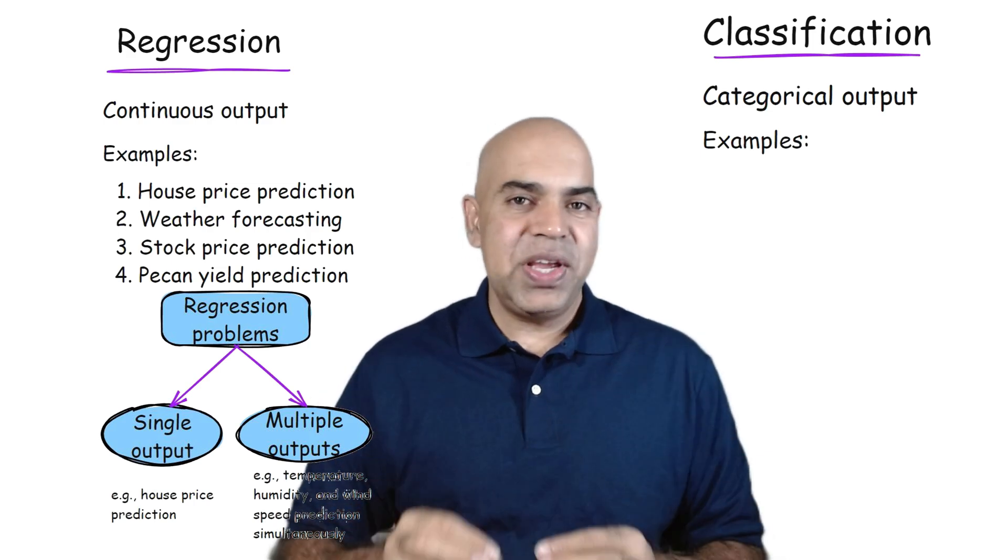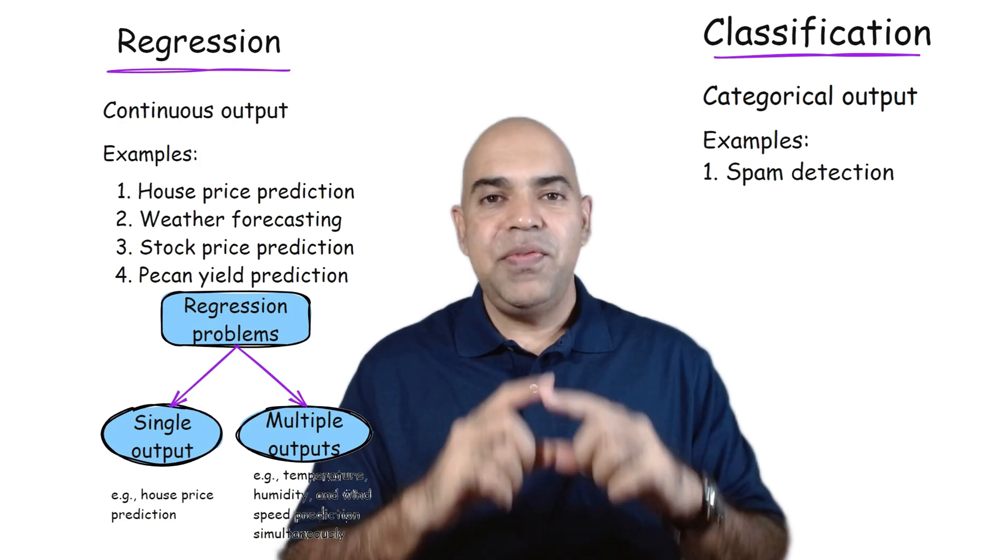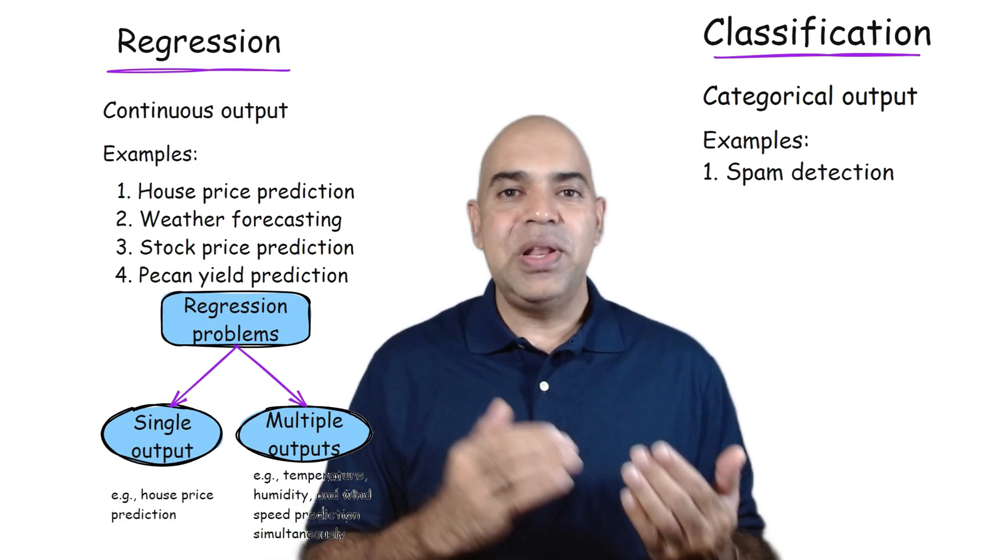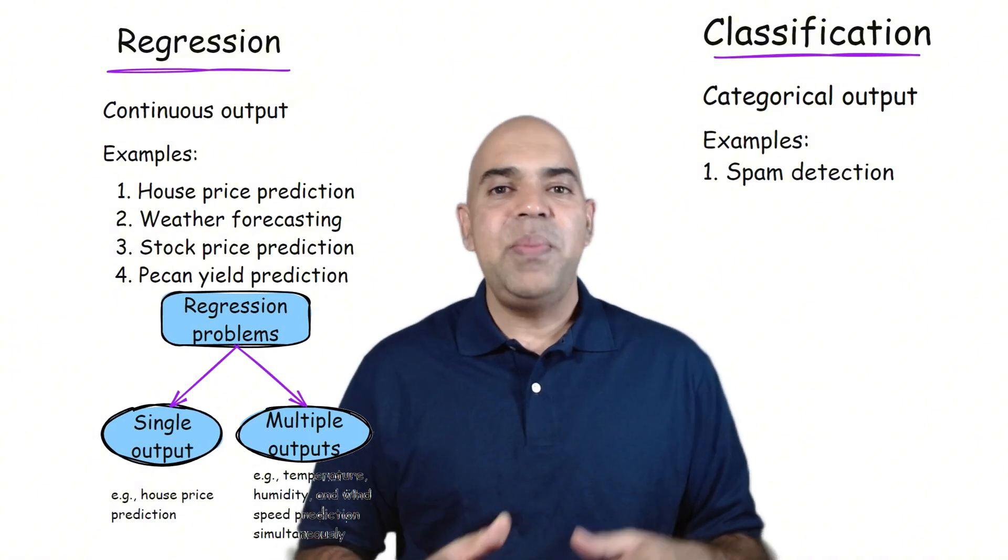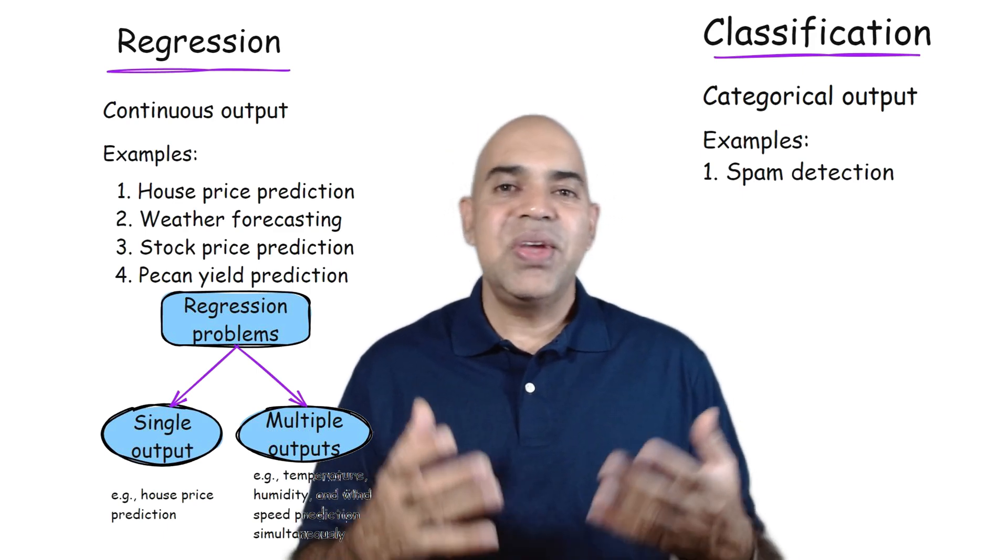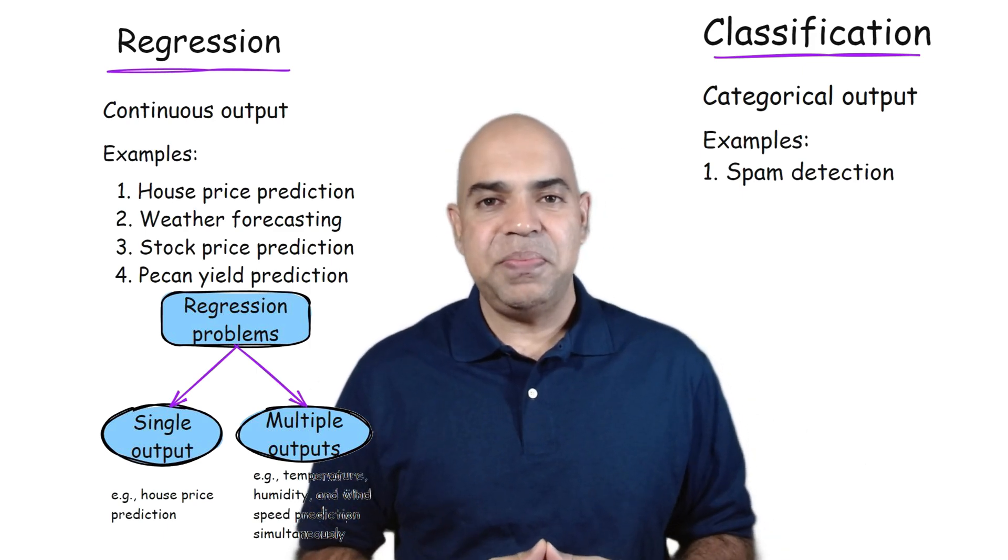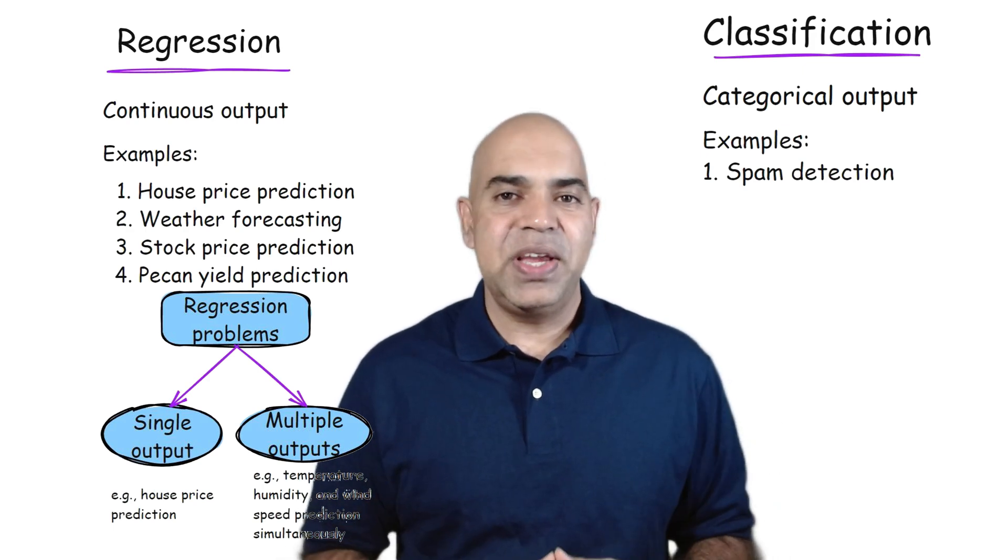One well-known classification problem is an email spam detection system. Given an email's content, the model predicts whether it is spam or not spam. A classification problem involving two classes or two categories is called binary classification. So a spam detection system is a binary classification system.